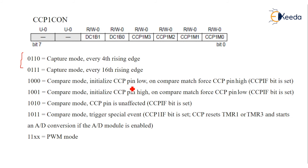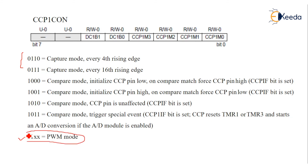In compare mode, the CCP pin is initialized. On a compare match, the CCP pin can go high, go low, or remain unaffected depending on the configuration bits. If there is a match the pin goes low; if there is no match the pin goes high. The last configuration is used for PWM mode.